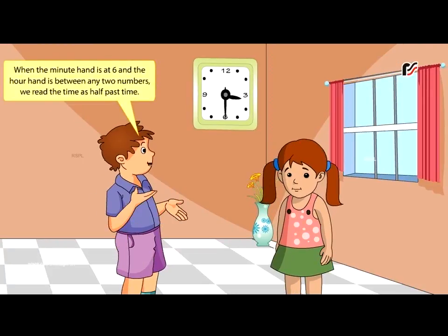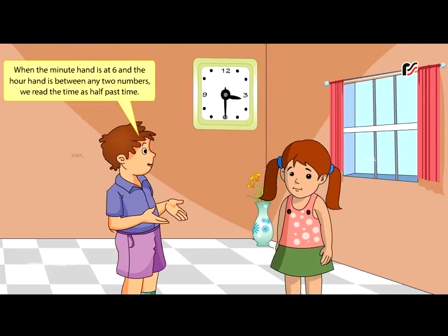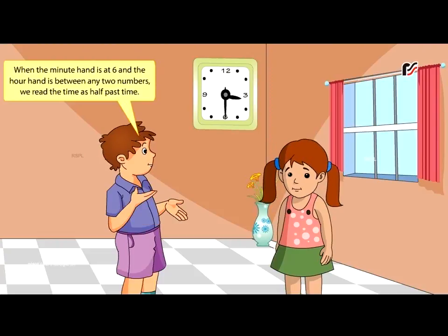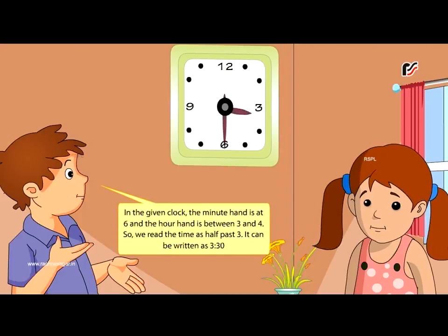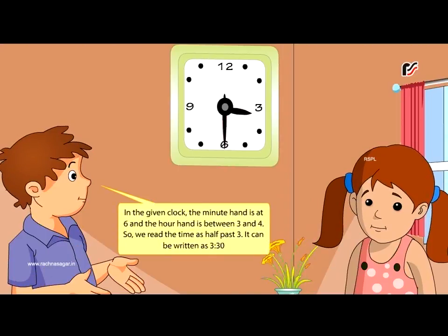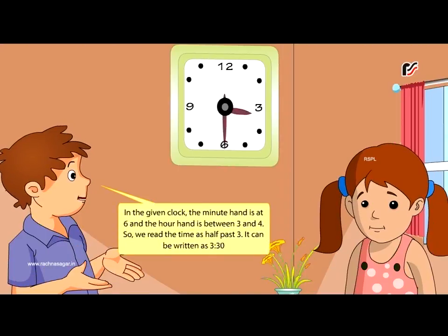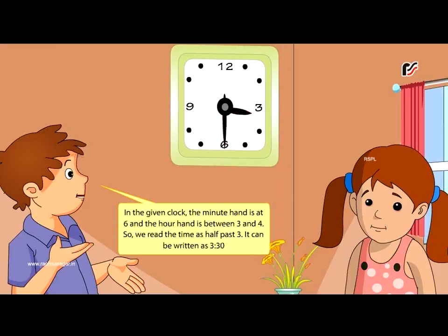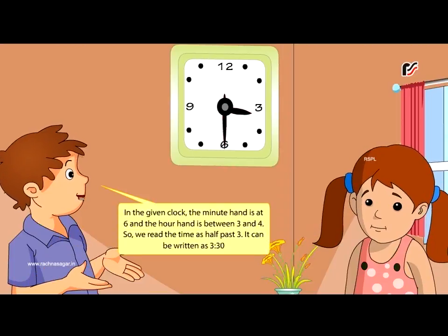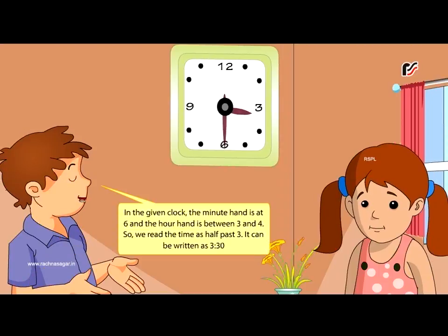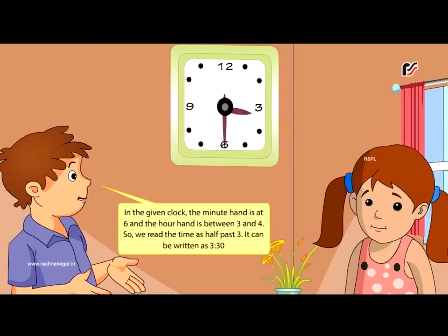When the minute hand is at six and the hour hand is between any two numbers, we read the time as half past. In the given clock, the minute hand is at six and the hour hand is between three and four. So we read the time as half past three. It can be written as three thirty.